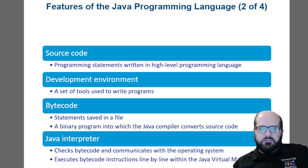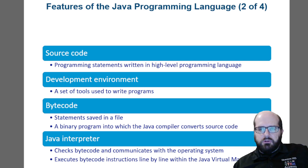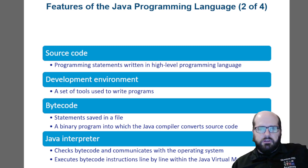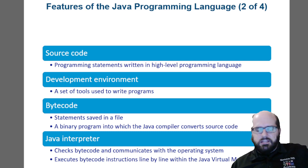The program statements are written in a high-level language. High-level programming languages reference the fact that the language can be written in a way that the programmer understands. You don't write random machine assembly language code. You say things like 'print' — language that makes sense to you. It's a high-level language.